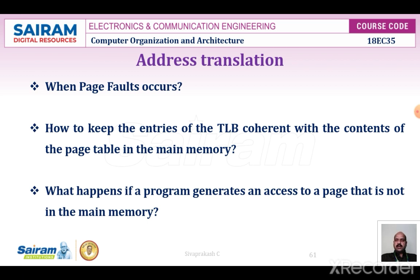When a program generates an access to a page that is not in main memory, a page fault occurs and the whole page must be brought into main memory from disk before execution can proceed. Upon detection of a page fault by the MMU, the MMU asks the operating system to intervene by raising an exception. Processing of the active task that caused the page fault is interrupted, and control is transferred to the OS, which then copies the requested page from secondary storage to main memory.